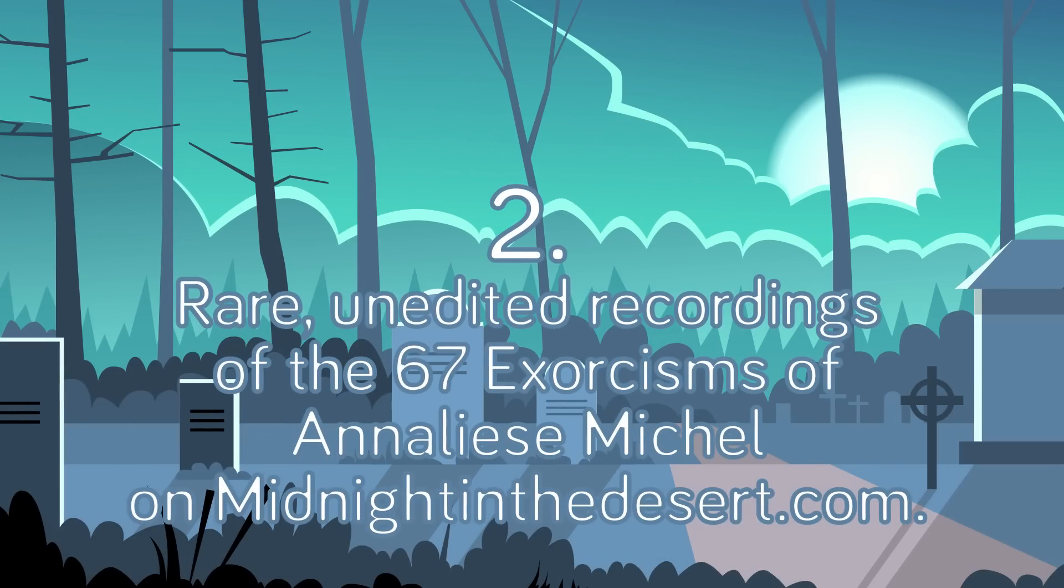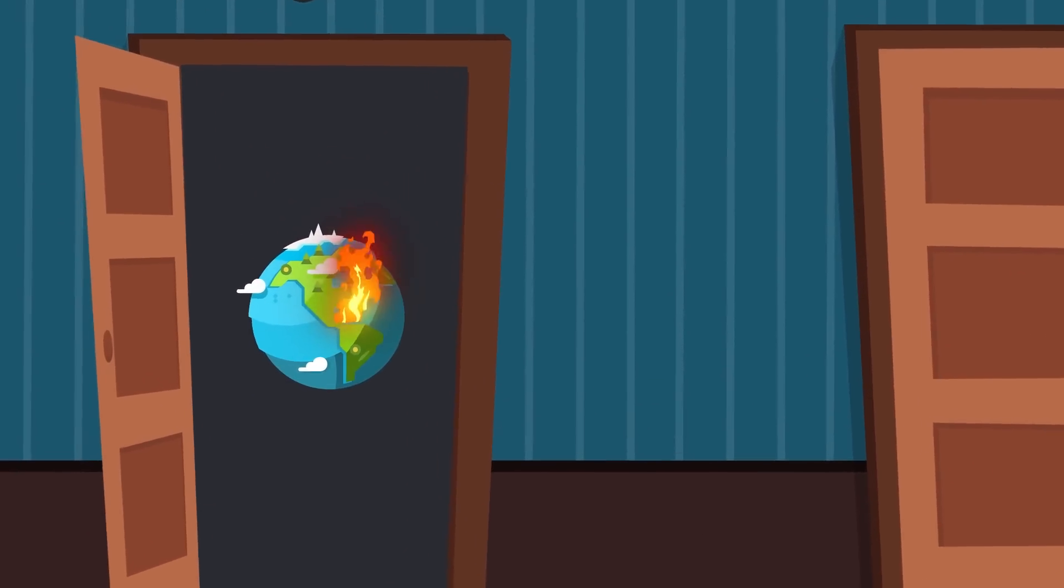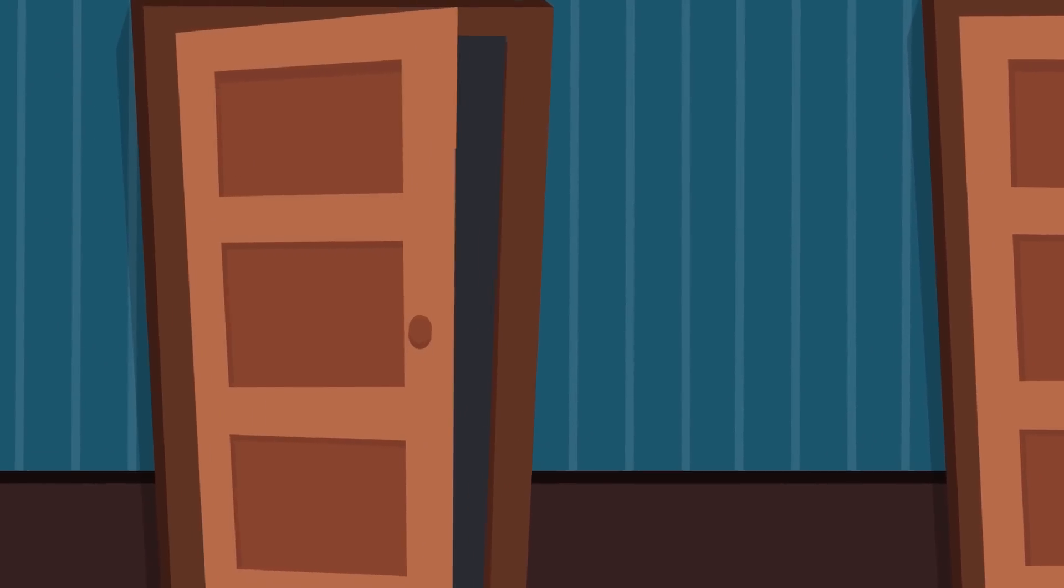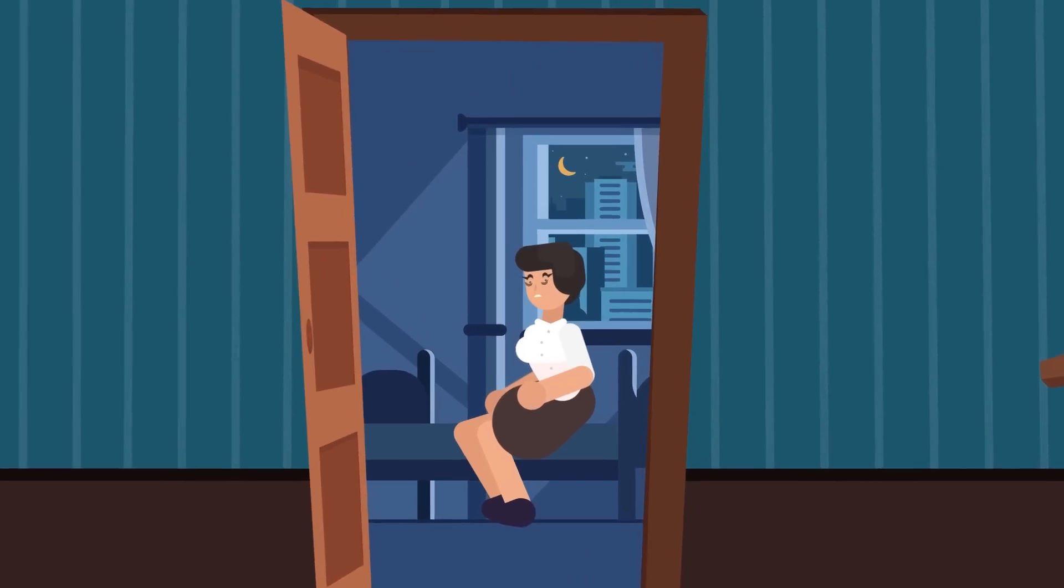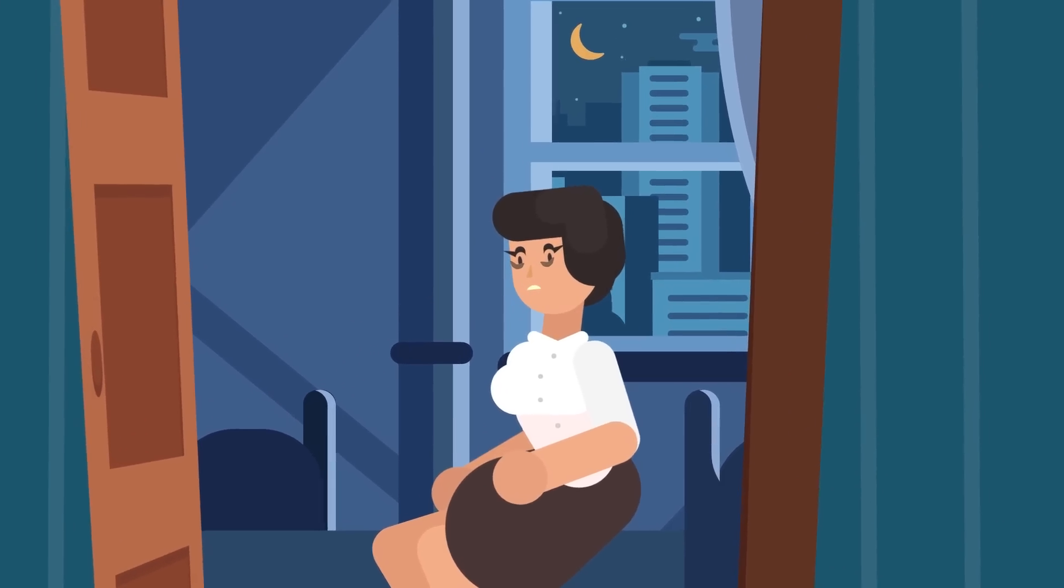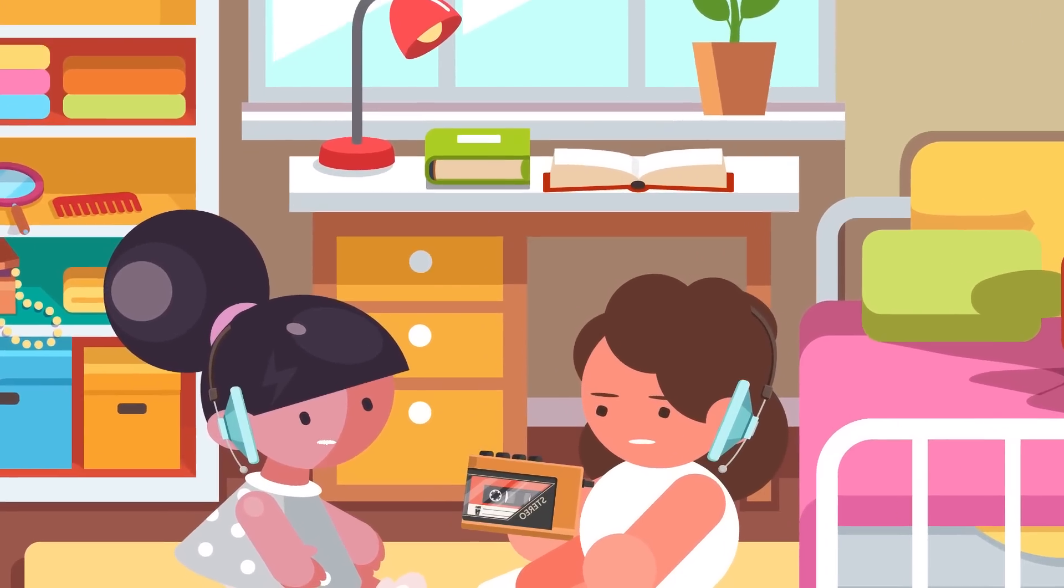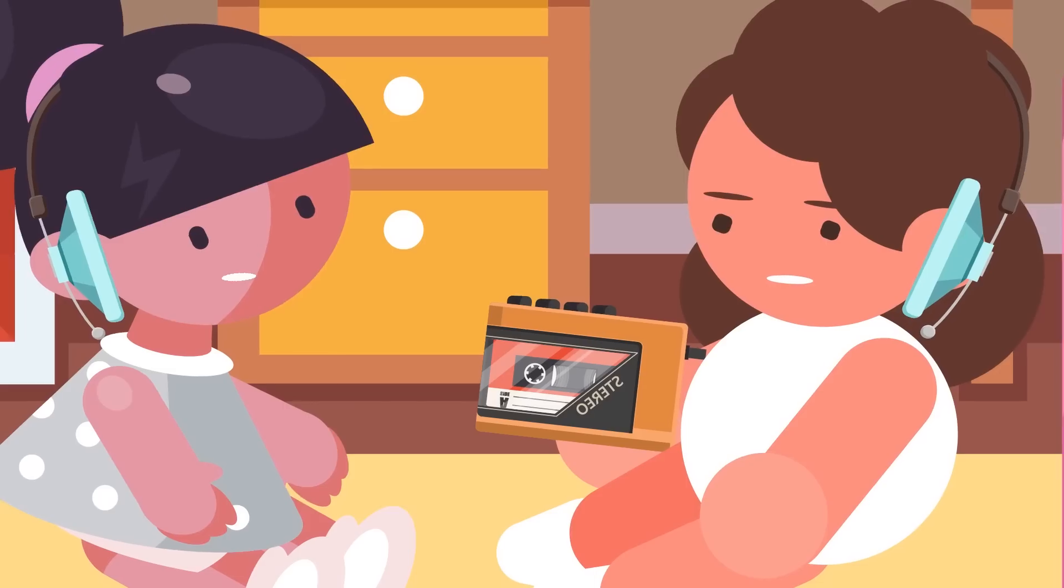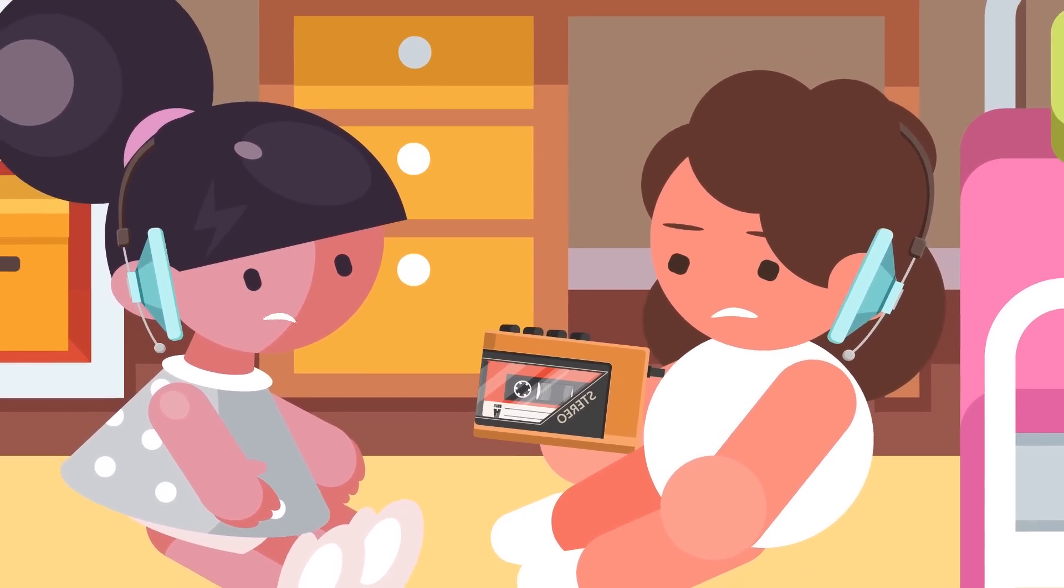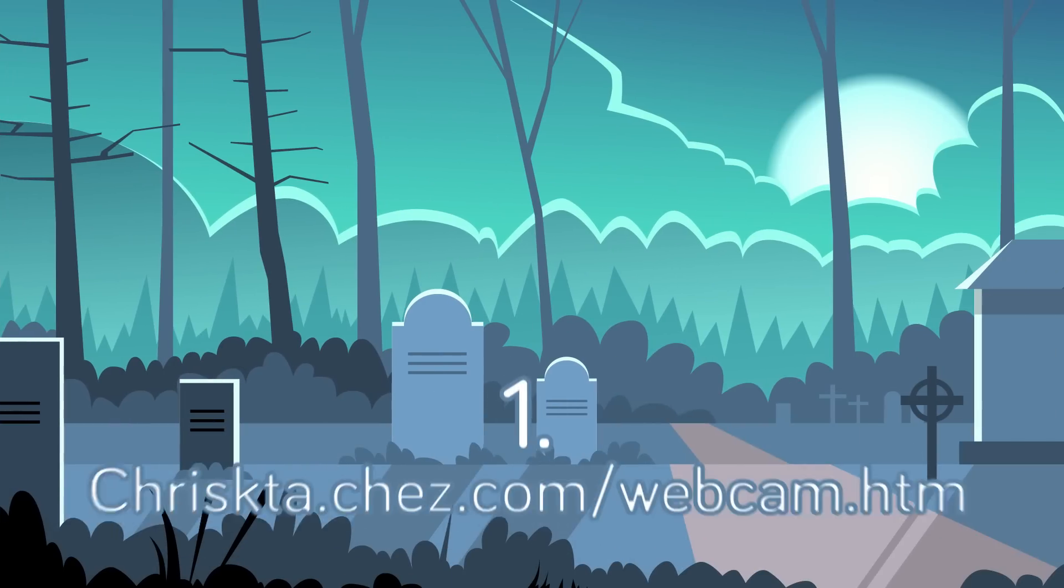Number 2: Rare Unedited Recordings of the 67 Exorcisms of Anneliese Michel on MidnightInTheDesert.com. So far we've discussed things that either are or could be happening to us or our planet, but we're telling you right now there's something even more scary and disturbing in otherworldly things. Take for example the recordings of a woman who many believe was possessed by demons, and you can listen to her horrifying screams during her exorcisms. She had 67 of these recordings, there are approximately an hour and a half of these disturbing audio recordings. True, they are mostly in German, but you don't have to understand what's being said to be scarred for life by her inhuman screaming.